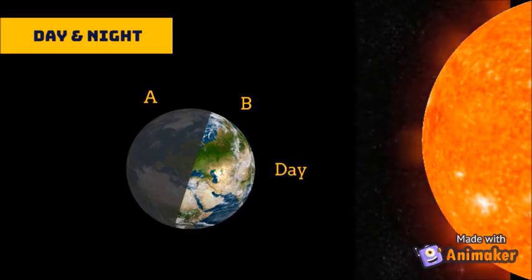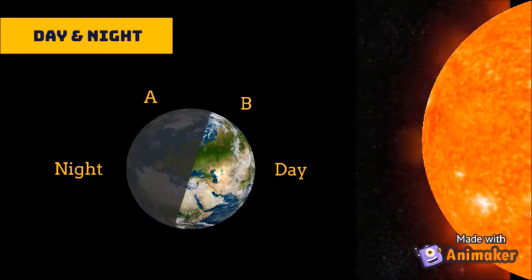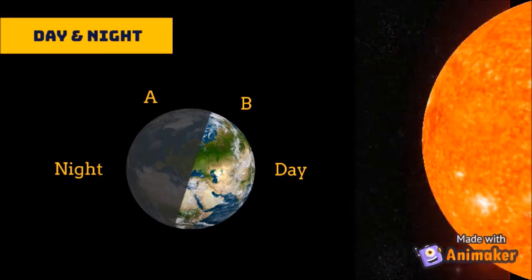The other side of the Earth faces away from the sun, so it doesn't get any light and remains dark. It is night there.